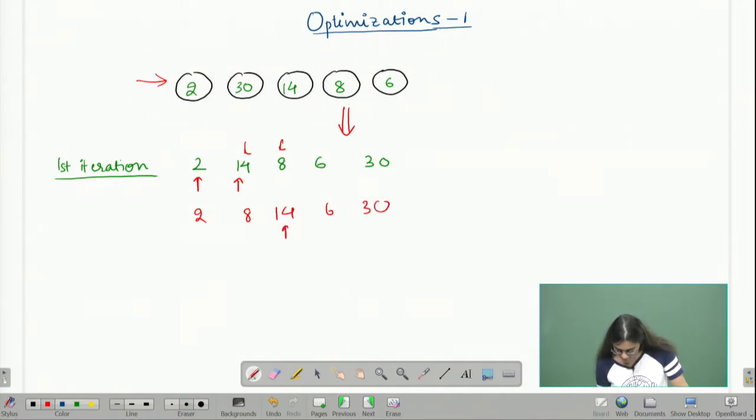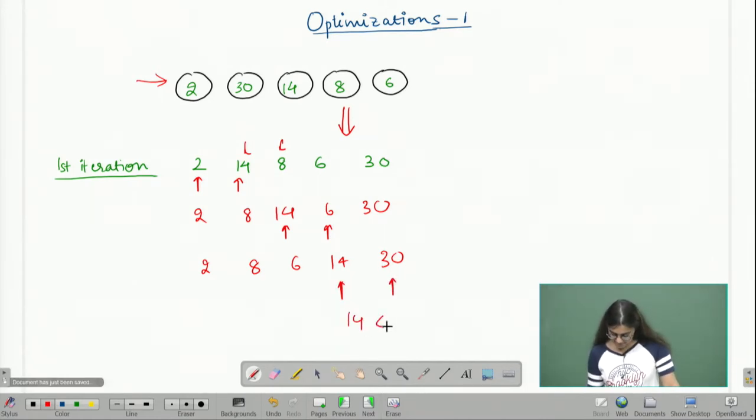Next, I look at 14 and 6 and then I swap them: 2, 8, 6, 14, and 30. Now I look at 14 and 30, and I do not need to swap these because 14 is less than 30.